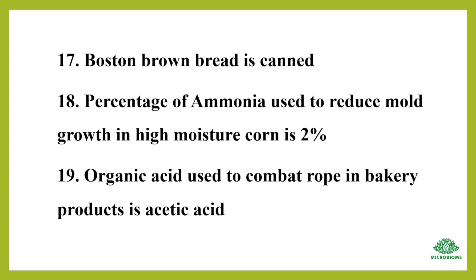The percentage of ammonia used to reduce mold growth in high moisture corn is 2%. The organic acid used to combat rope in bakery products is acetic acid.